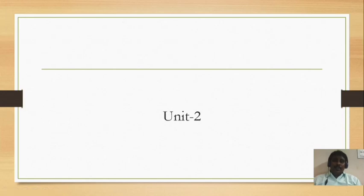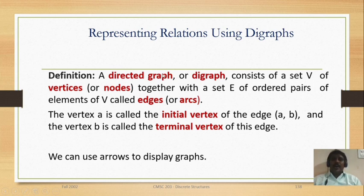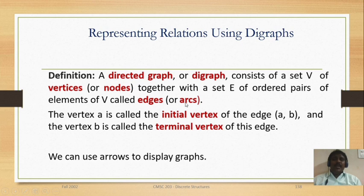Today we are going to discuss some other topics in unit 2, that is digraphs — representing relations using digraphs. Digraph is an important topic. A digraph consists of edges and vertices. The definition is a directed graph, which has directions, meaning it has arrows. A digraph consists of a set V of vertices, also called nodes, together with a set of edges E, also called arcs.